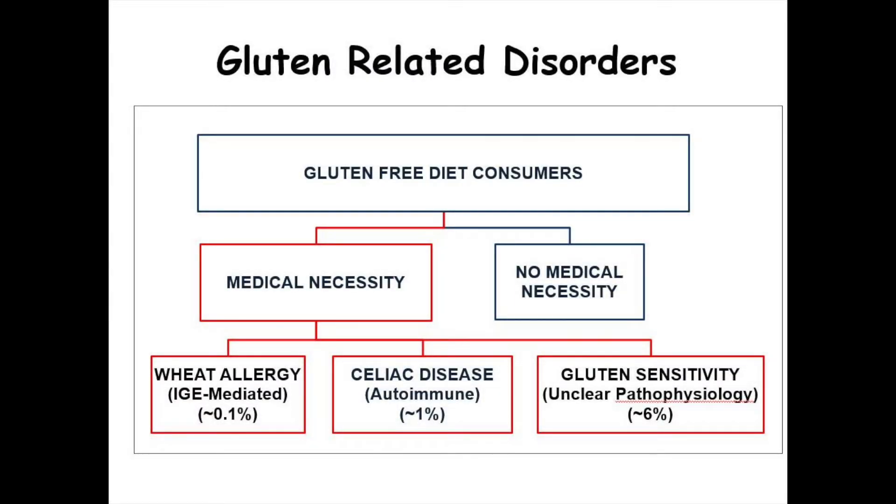Now that we know what gluten is, let's talk about the gluten-related disorders. We know there are lots of people on a gluten-free diet — some without medical necessity and some with. We're going to focus on those that require a gluten-free diet for medical necessity: patients with wheat allergy, which is an IgE-based allergy to wheat that can cause lip swelling, throat swelling, and anaphylaxis; celiac disease, which is an autoimmune disease; and non-celiac gluten sensitivity, which we're still learning about.